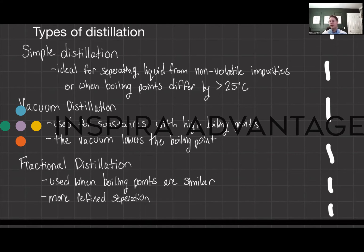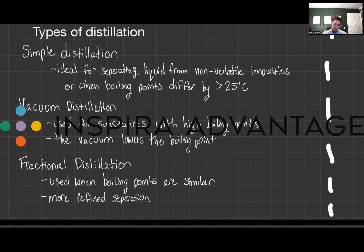Vacuum distillation is a little different. You'll want to use vacuum distillation when the boiling points are either very high, which can cause decomposition of your substance, or if you have a super volatile substance where heating it could cause reactions or general degradation. By reducing the pressure in the vacuum, boiling will occur at a lower temperature, preserving the integrity of those compounds.